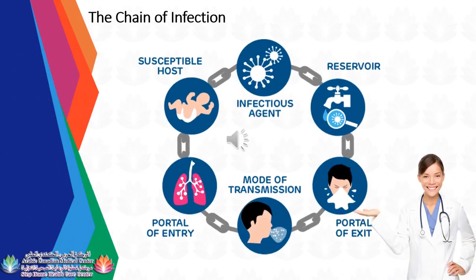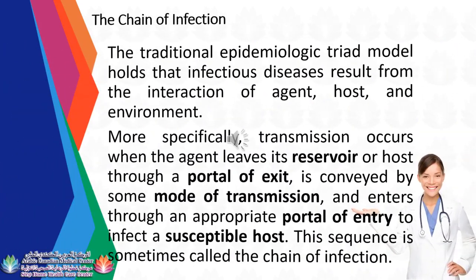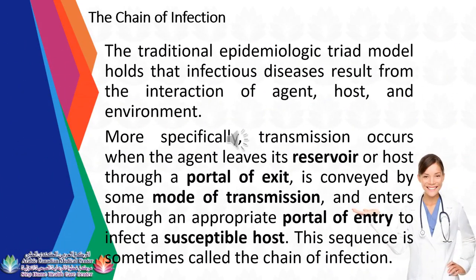The chain of infection. The traditional epidemiologic triad model holds that infectious diseases result from the interaction of agent, host, and environment. More specifically, transmission occurs when the agent leaves its reservoir or host through a portal of exit, is conveyed by some mode of transmission, and goes through an appropriate portal of entry to infect a susceptible host. This sequence is sometimes called the chain of infection.